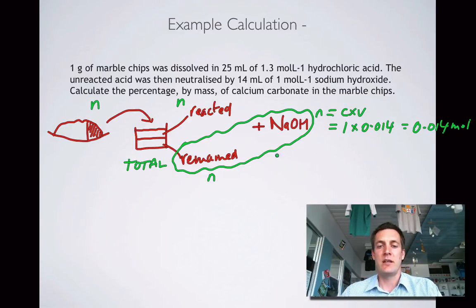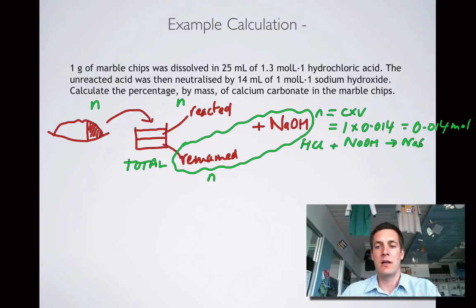That is reacting with what? Well, it's reacting with the hydrochloric acid that remained in here. So we're getting this reaction, HCl plus NaOH, and that they are forming sodium chloride and water. Why is that important? Well, because I can see here that it's a 1 to 1 reaction. So that tells me what? Well, that tells me that the number of moles of acid that remained is the same as that. It's 0.014 moles.